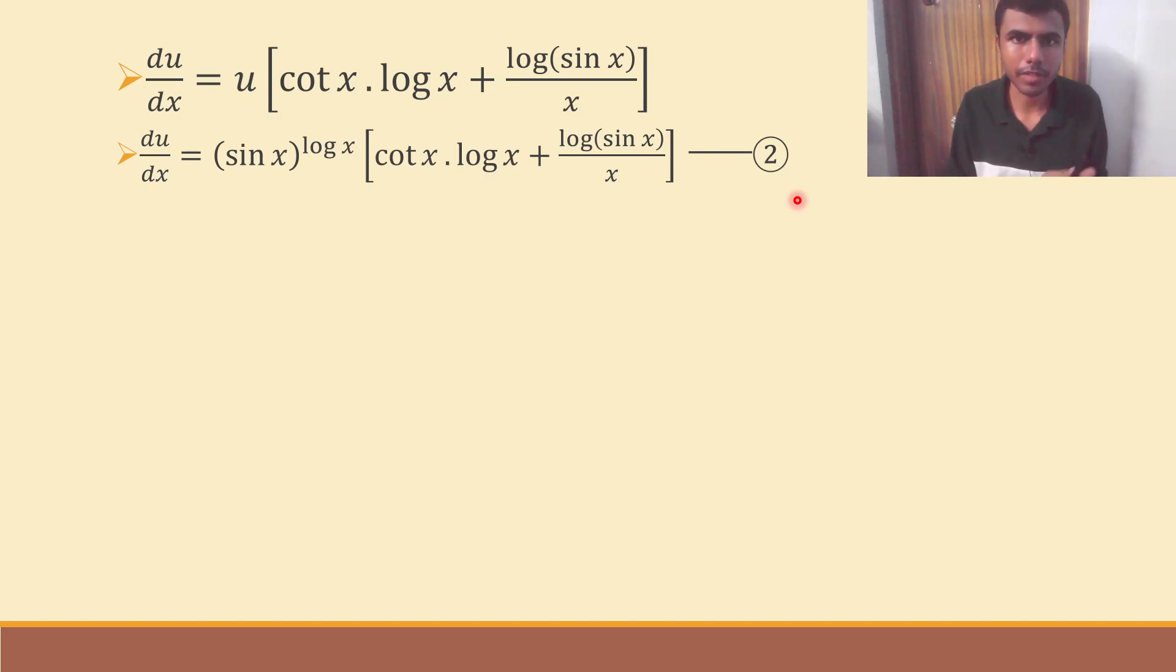Next, what we need to find out is dv by dx. At this point, I feel you might have gotten a little bored. But yeah, if we want to achieve something, if we want to gain something, if we want to learn something, naturally, we have to put in effort. We have to sacrifice something. Right. So, that we could get good marks, good results, a better future.